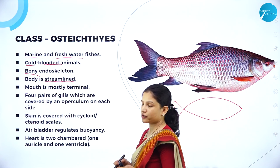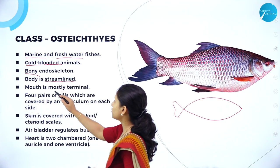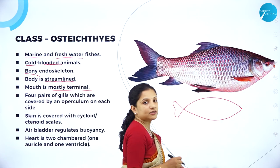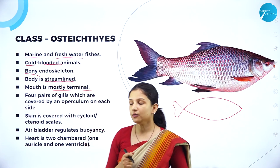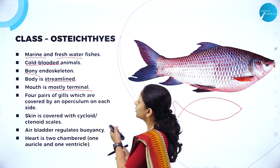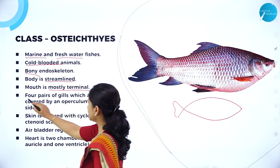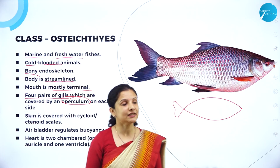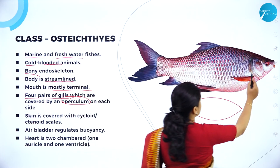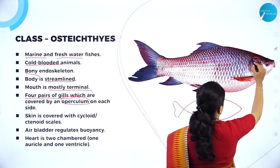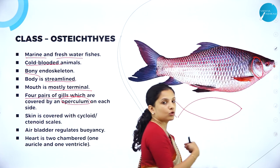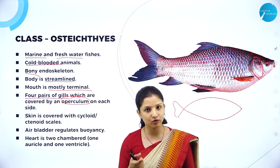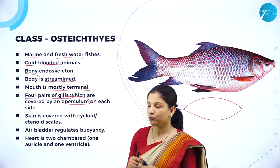The mouth is mostly terminal to facilitate feeding — located at the front of the head. They have four pairs of gills, and the gills are covered by an operculum, so we cannot see the gill slits directly. Below and inside the operculum you can find the gill slits. Chondrichthyes did not have an operculum — their gill slits were openly visible.